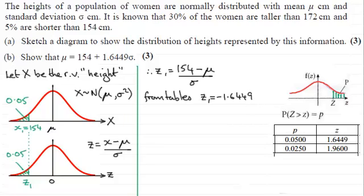So I just need to substitute this up into 1, okay, we'll just say sub in 1. And if I substitute that into 1 we've got in place of Z1 then minus 1.6449 equals 154 minus mu divided by sigma.